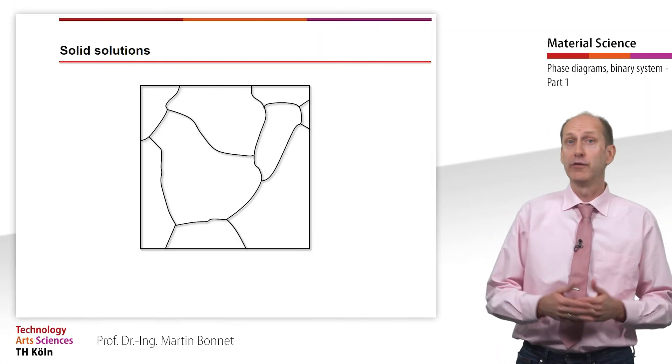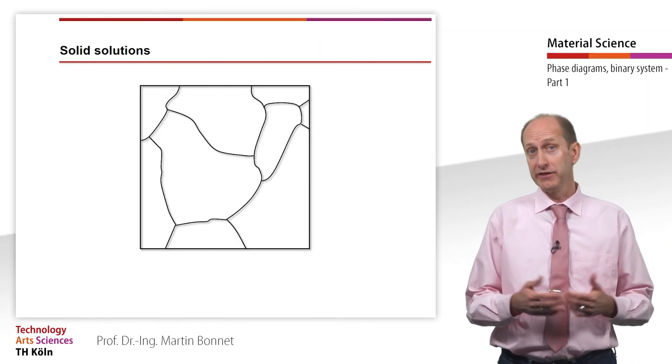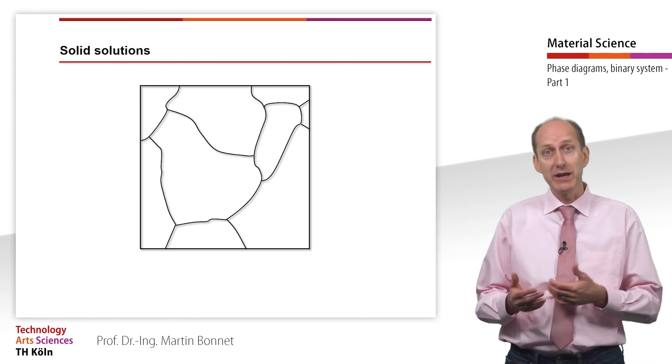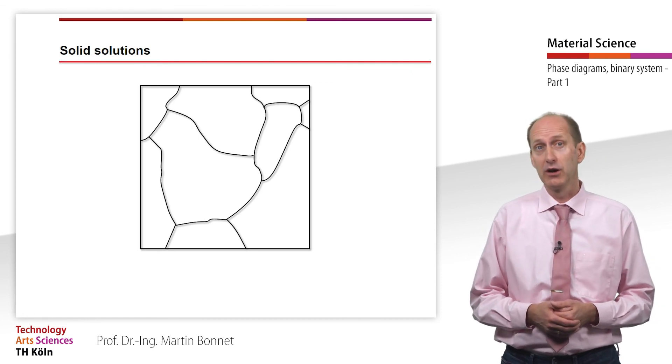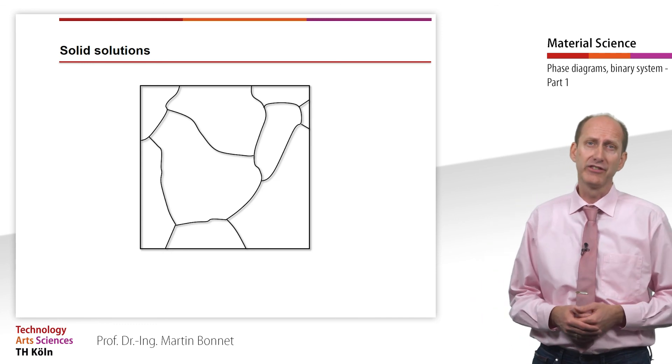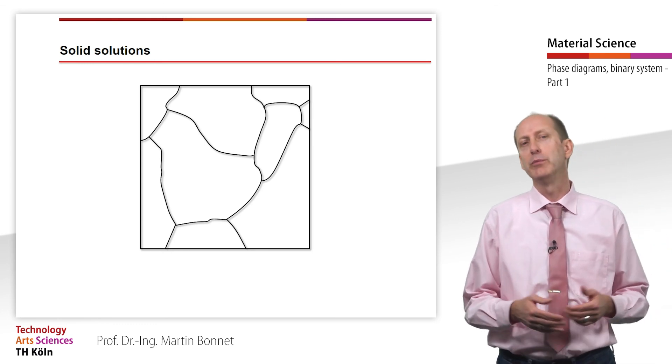The embedding of foreign atoms is not visible in the micrograph. Only the grains and grain boundaries can be seen. Accordingly, the micrograph does not differ from that of pure metals.